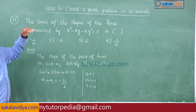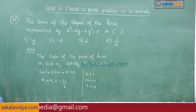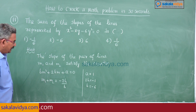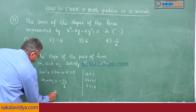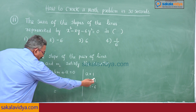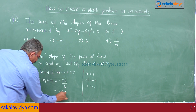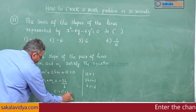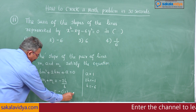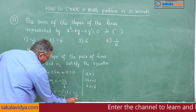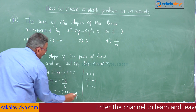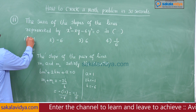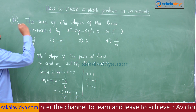We have to find the sum of the slopes, given by -2h/b = -(-1)/(-6) = 1/(-6) = -1/6. So minus 1 by 6 is the correct answer, which is the first option.